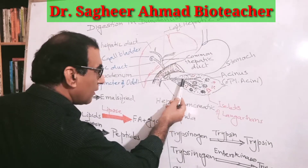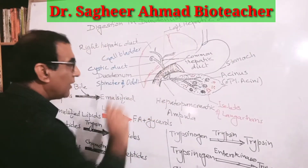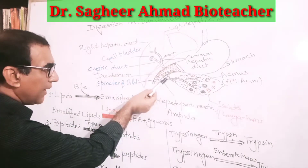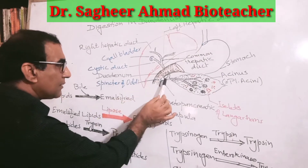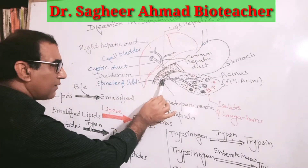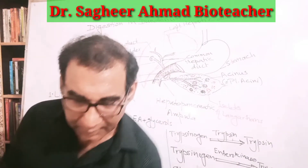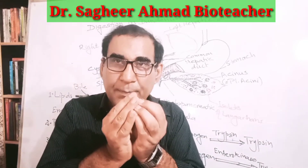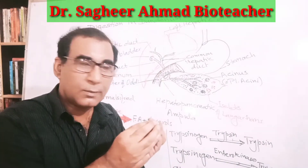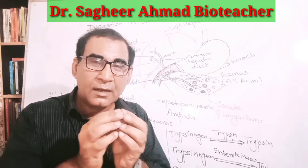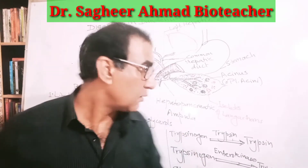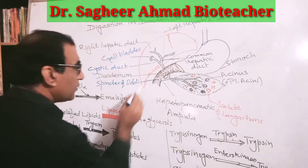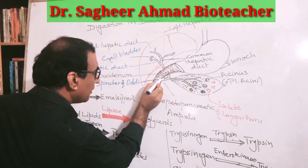The pancreatic duct and common bile duct join together to form the hepatopancreatic duct. Rather than entering as separate ducts, they form an ampulla-like structure. This ampulla enters into the duodenum, and at the end of the ampulla is present the sphincter of Oddi. The ampulla and sphincter of Oddi are shown here in the diagram.